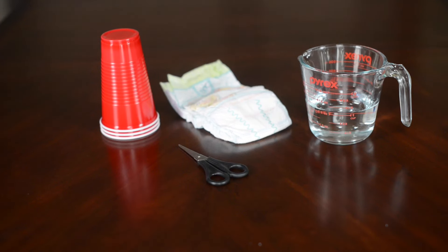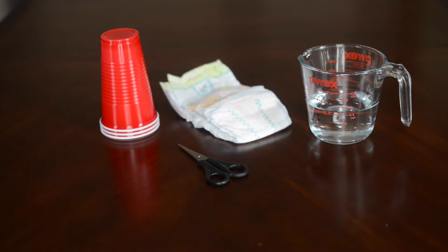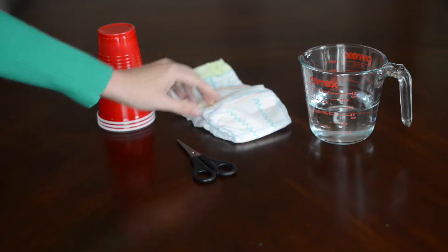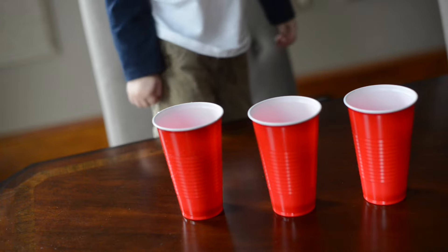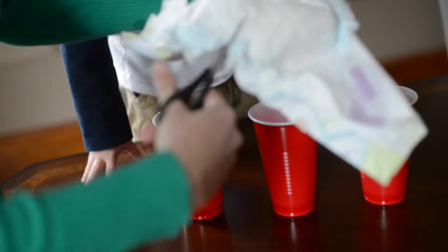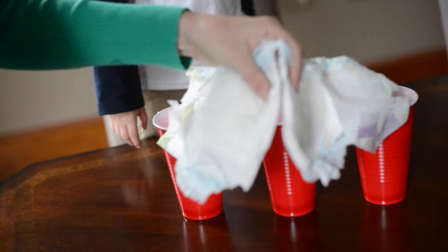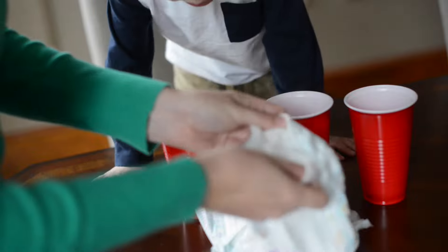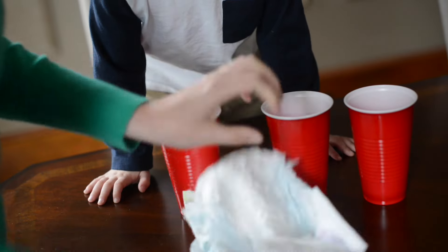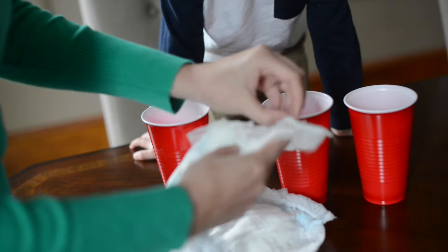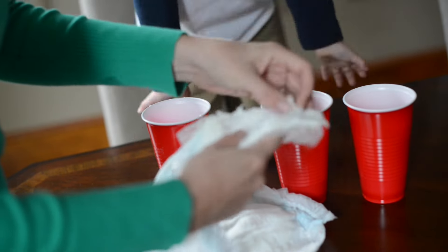What you'll need for this are three cups that you cannot see through, scissors, a diaper, and some water. Then you take your diaper and cut it in half to rip it open and get all the super absorbent polymers inside the diaper. Then put those into your cup and they will soak up the water.